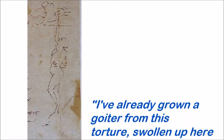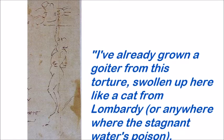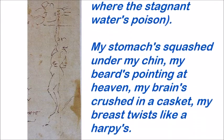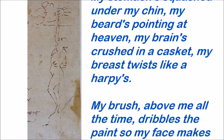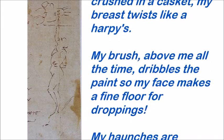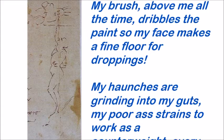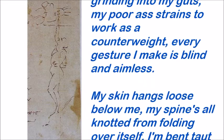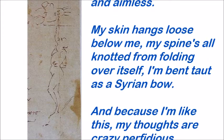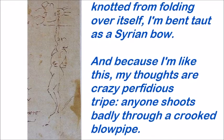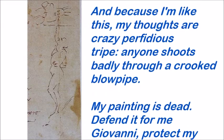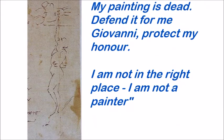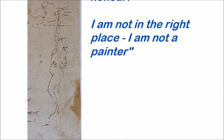I've already grown a goiter from this torture, swollen up here like a cat from Lombardy, or anywhere where the stagnant waters poison. My stomach squashed under my chin, my beard pointing at heaven, my brain's crushed in a casket, my breasts twist like a harpy's, my brush above me all the time dribbles the paint so my face makes a fine floor for droppings. My haunches are grinding into my guts, my poor ass strains to work as a counterweight, every gesture I make is blind and aimless, my skin hangs loose below me, my spine's all knotted from folding over itself. I'm bent taut as a Syrian bow, and because I'm like this my thoughts are crazy — a perfidious tribe. Anyone shoots badly through a crooked blowpipe. My painting is dead — defend it for me Giovanni, protect my honour. I am not in the right place. I am not a painter.